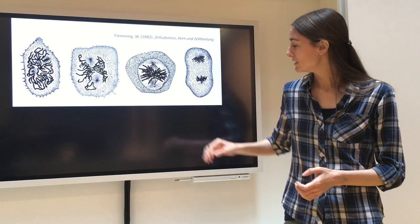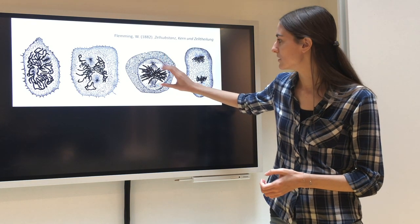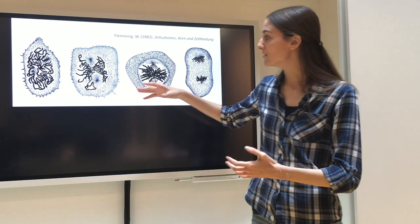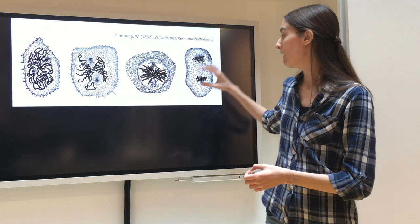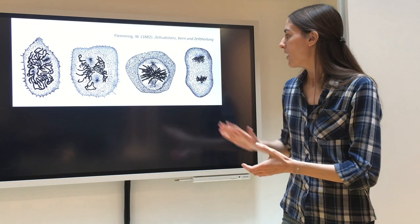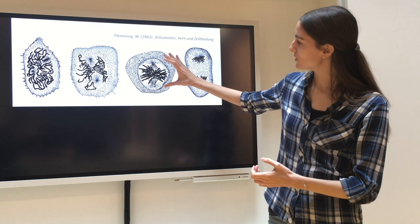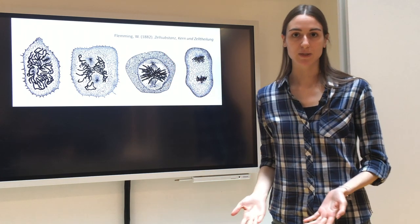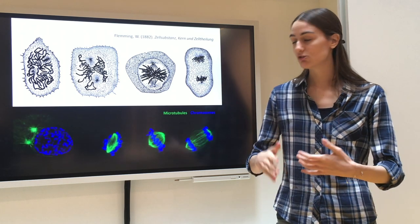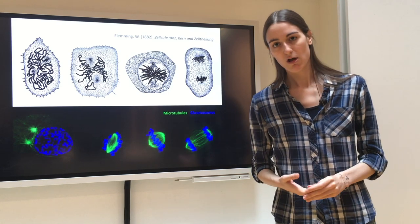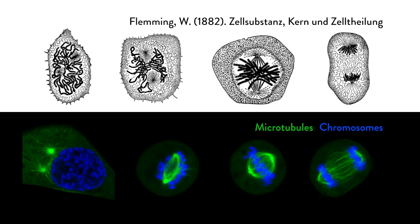We can also see filaments connecting chromosomes to the poles of the cell, seemingly moving them first to the center and then to the poles. Fleming called this process mitosis, and we called this filamentous bipolar structure the mitotic spindle. Today, thanks to the continuing advancement of microscopy techniques, we know that the main structural component — the filaments — are tubulin microtubules, here shown in green.